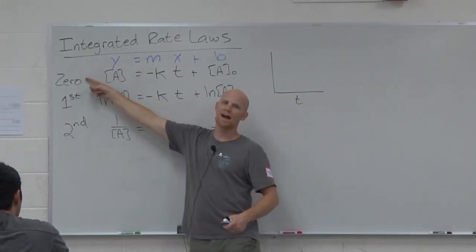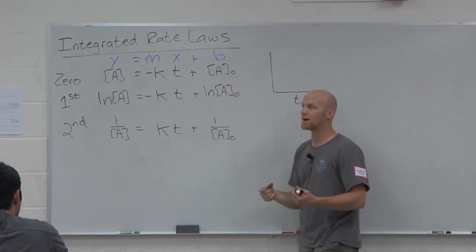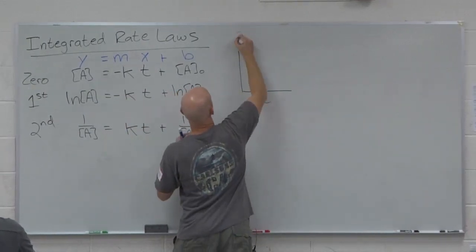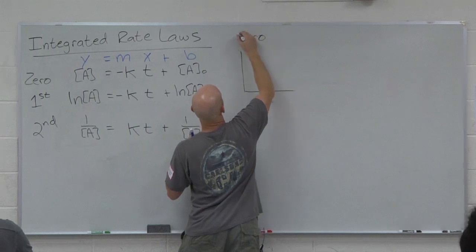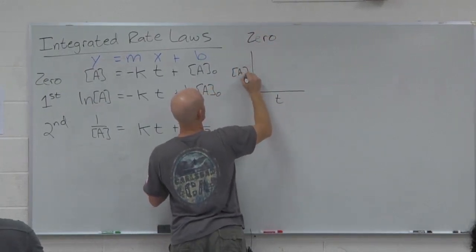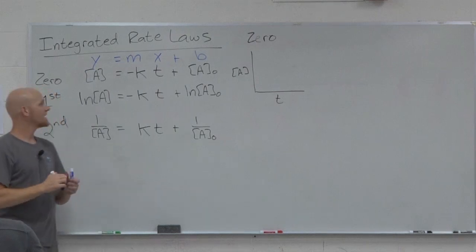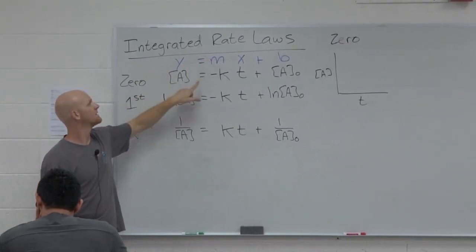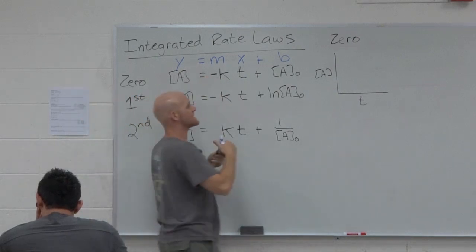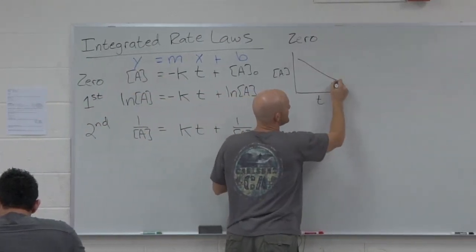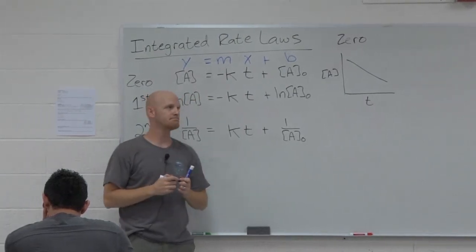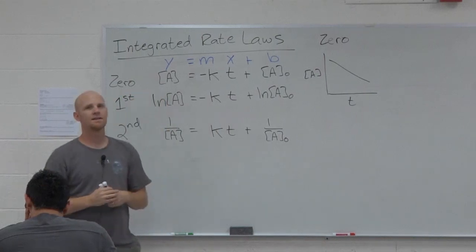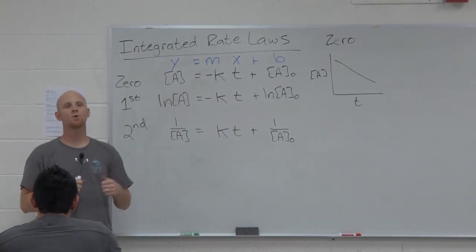If I had a zero order reactant and I want to get a straight line, what do I need to plot on the Y axis? Concentration of A. If I'm looking at a reactant that's zero order, I'll just put the concentration of the reactant on the Y axis. So in this case, for zero order, what would the slope M be equal to? Negative K. It tells me it's not just K, it's negative K. It's a downhill slope. It's a negative slope.